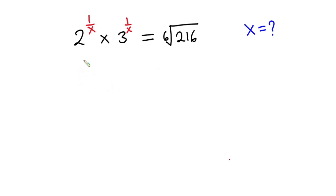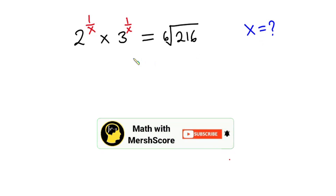Hello everyone. In this video, we have this nice exponential equation. We have 2 to the power 1 over x times 3 to the power 1 over x is equal to the sixth root of 216. And we have to find the value of x. As always, pause the video and try first. And if you are new here, consider subscribing and don't forget to like this video. Now let's get started.